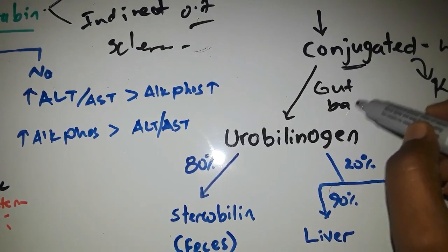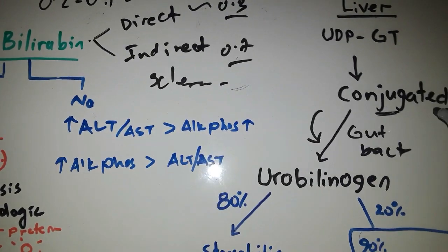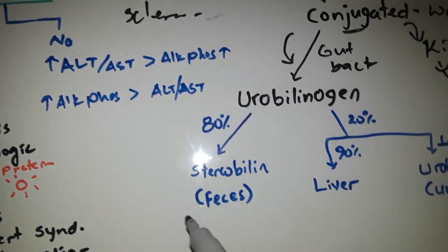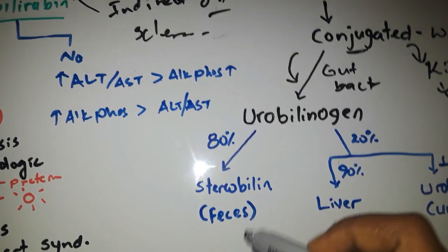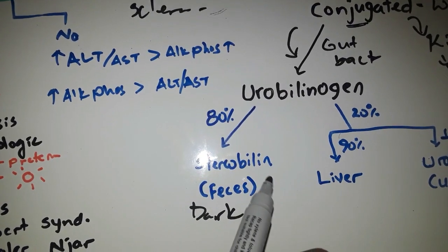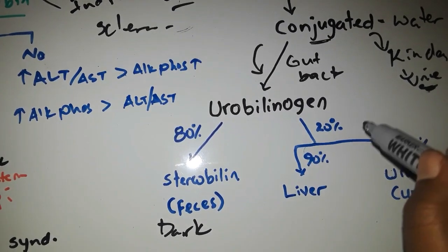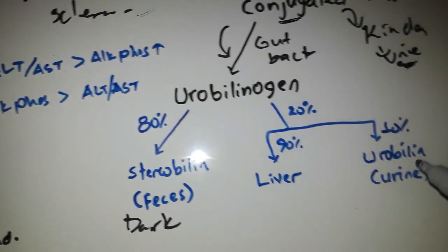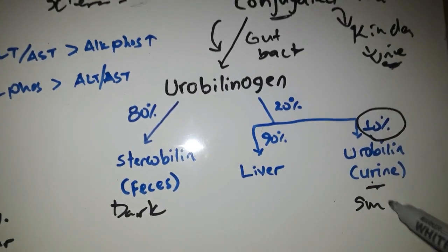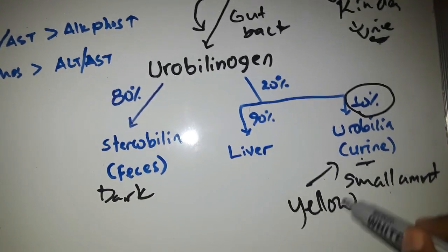In the gut, bacteria convert conjugated bilirubin. This produces urobilinogen and stercobilin. About 80% of urobilinogen is converted to stercobilin by gut bacteria. Stercobilin gives stool its dark color. Most urobilinogen is excreted in the feces, while a small amount is reabsorbed and excreted in the urine, giving urine its yellow color.